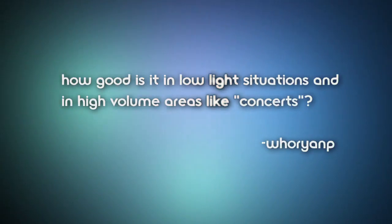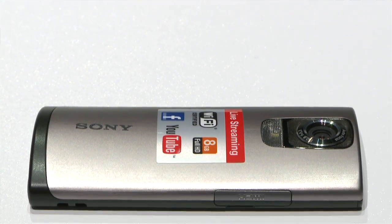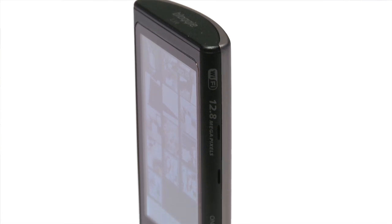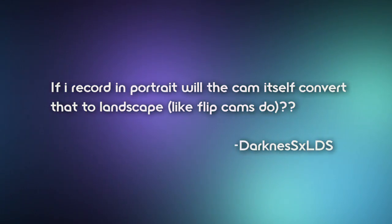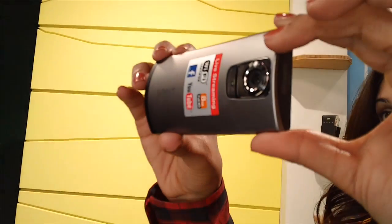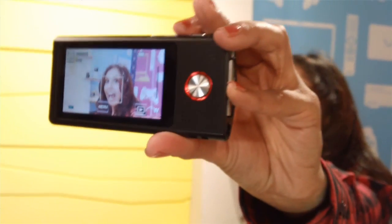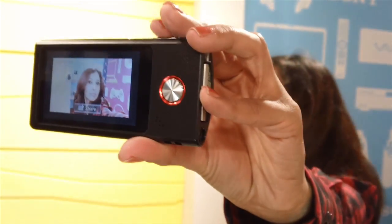Here's a question about the Bloggy Live camera: how good is it in low-light situations and in high-volume areas like concerts? This was asked a lot about previous models, and the product team listened. In addition to the high-quality CMOS sensor, Sony added a very bright LED lamp to help illuminate your subjects. One more Bloggy Live question: if I record in portrait, will the camera convert that to landscape like Flip cams do? This functions the same as the previous generation of Bloggies — you should shoot in landscape if you want landscape video, and whichever way you're holding it, that's which way the video is going to go.